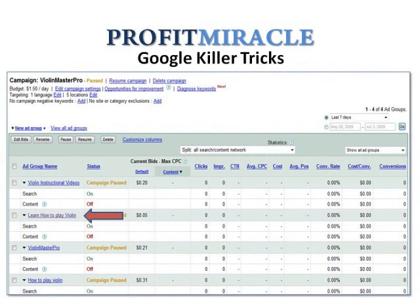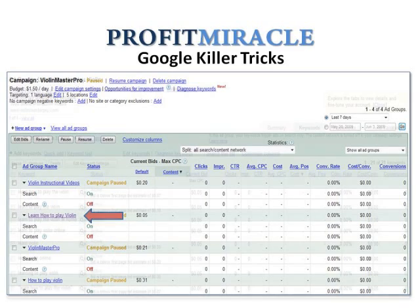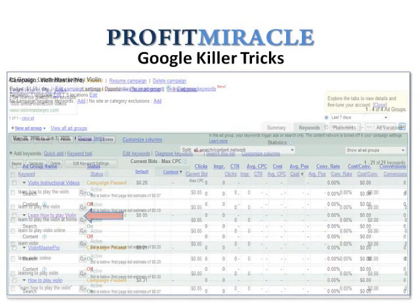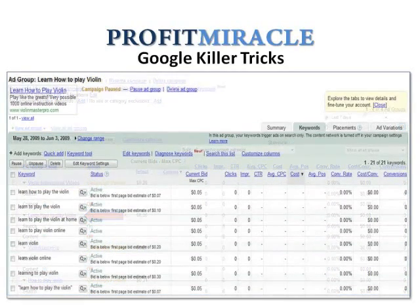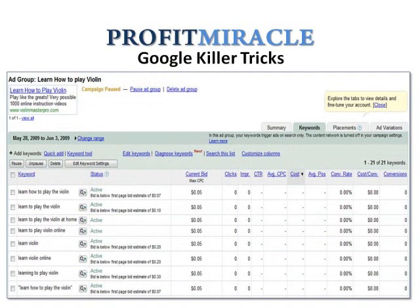Now let's take a look at the Learn How to Play Violin ad group. This group revolves around learning how to play the violin. What I'm going to do here is add more high-converting keywords by clicking on the Keyword Tool — that's the Google Keyword Tool.